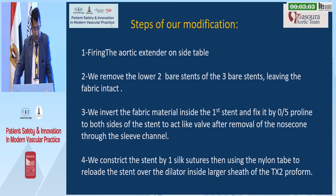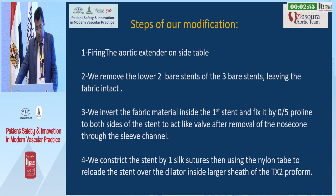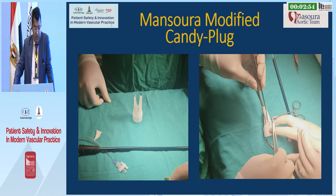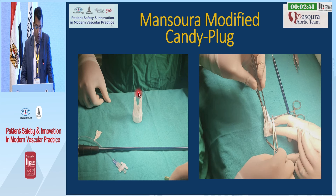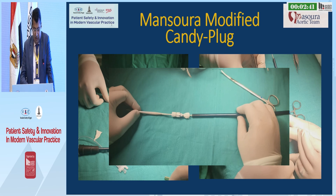We constrict the stent by one silk suture, then use nylon tape to reload the stent over the dilator inside larger sheets of the tape. This is how the stent looks after removal of the 2-pair stents and excision of part of the fabric, then suturing and inverting the fabric, before reloading it inside the sheets.